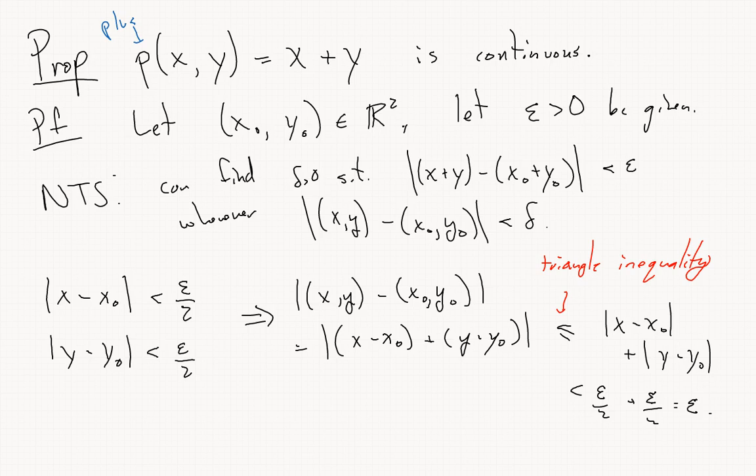What we've shown is that provided (x,y) is in this diamond shape, where both coordinates have length epsilon over 2, we get the desired result. But what we really needed to show was using the normal distance between two points in the plane. We can fix that by considering a disk inscribed in this diamond, and the radius of that disk will give us the delta we're looking for.